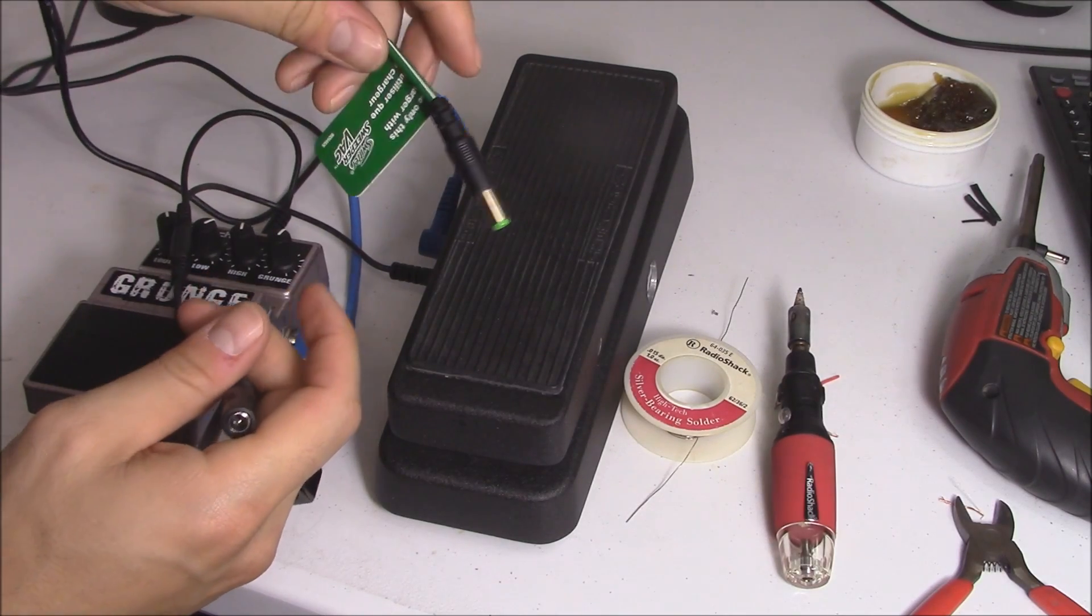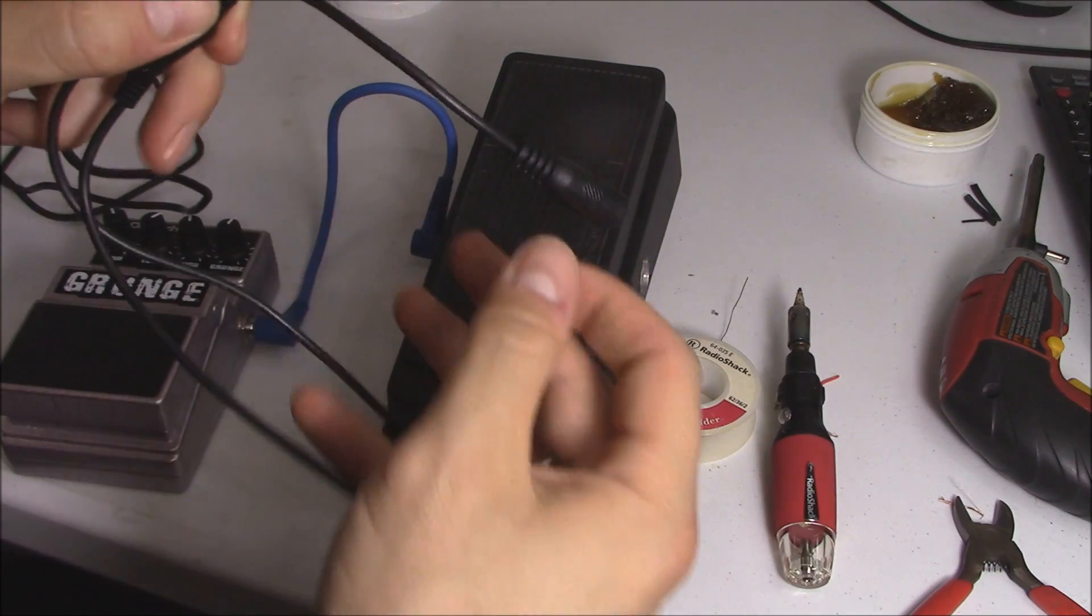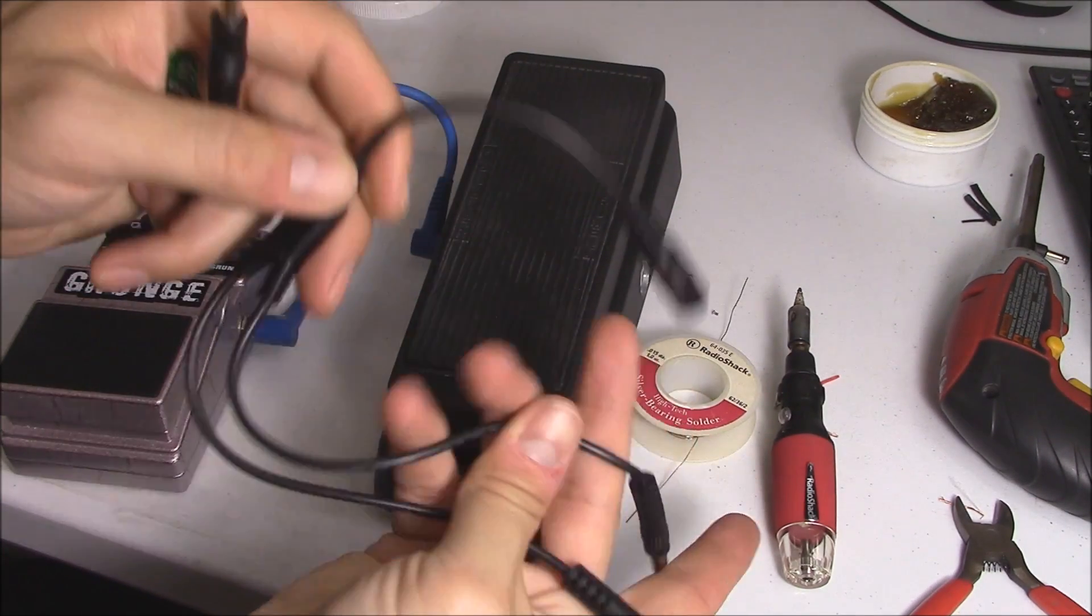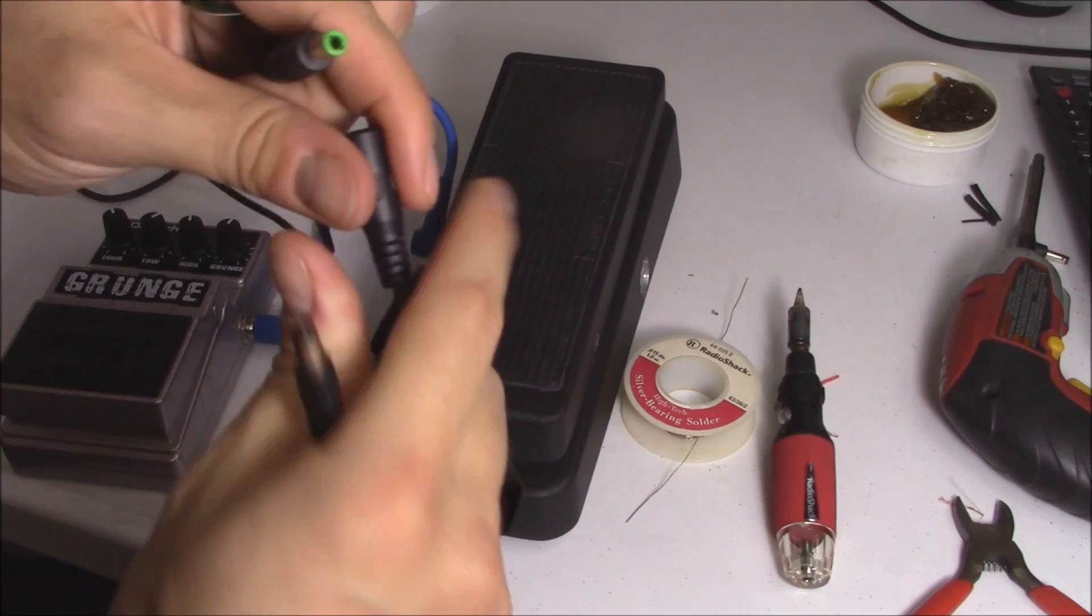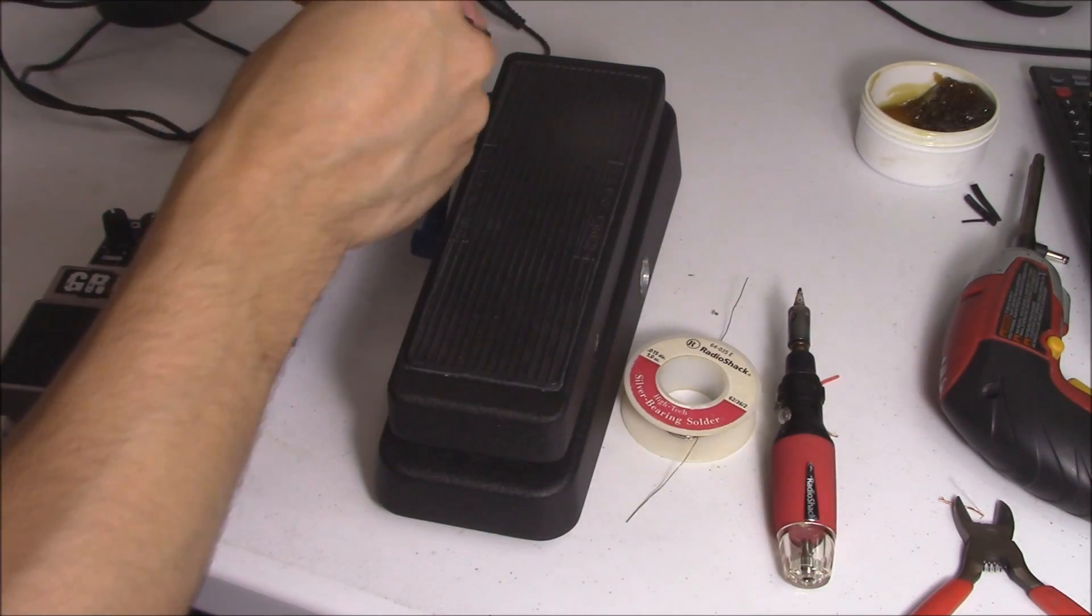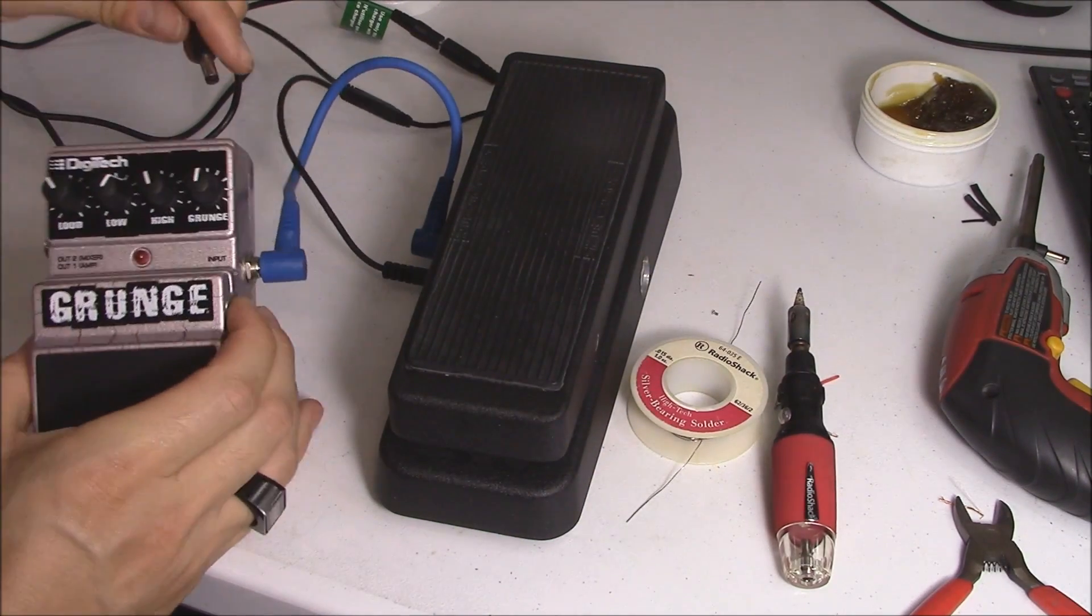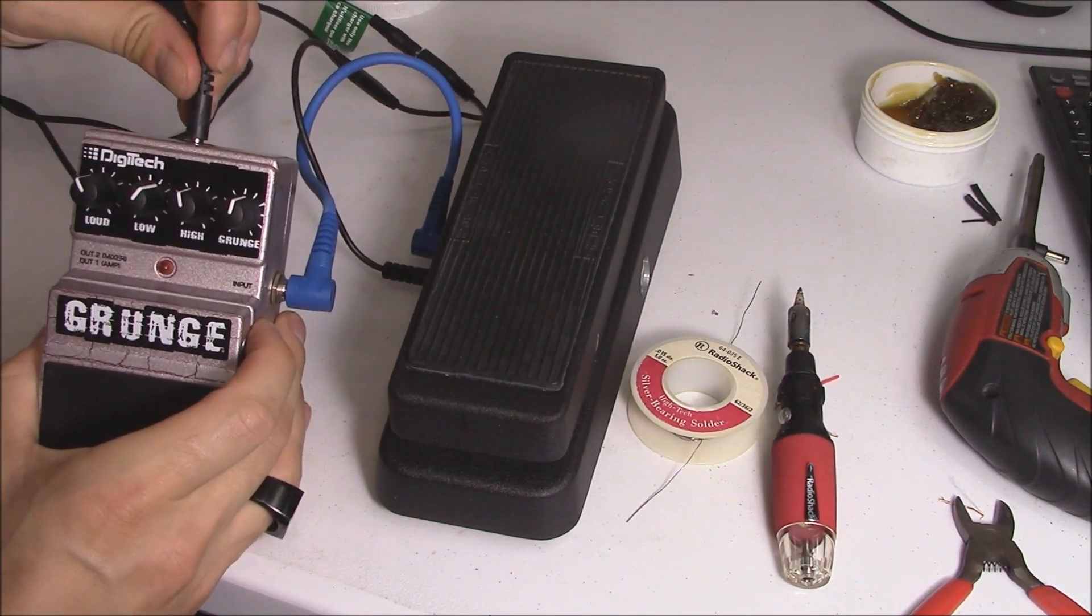So now that we have this cable that was actually from my Swiffer, I've got this Y adapter that I got on Amazon right here. And I'm just going to plug it in like that. Plug it into the wah pedal. Plug it into the distortion pedal right here.